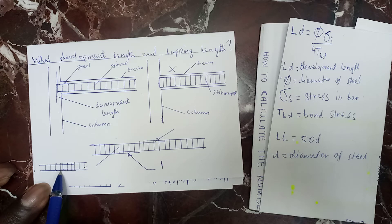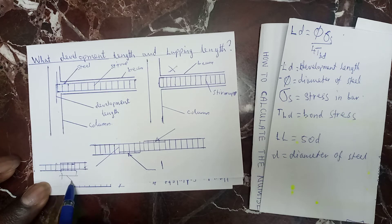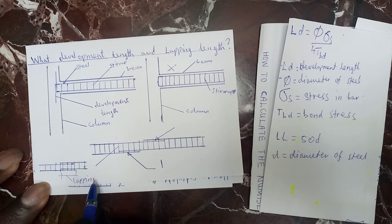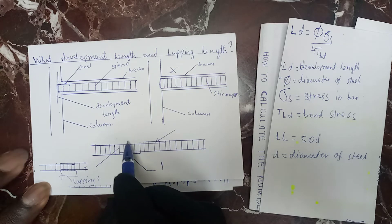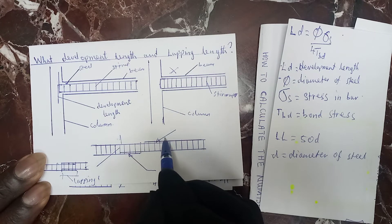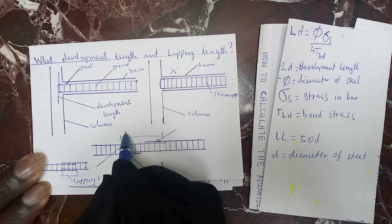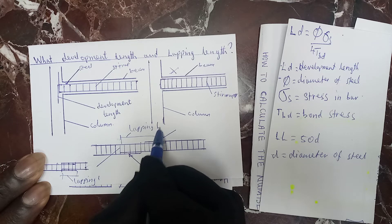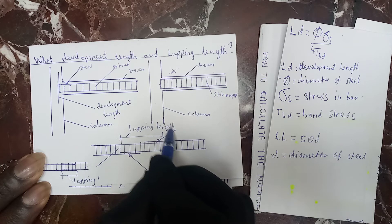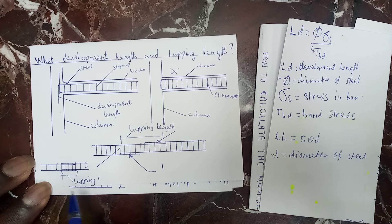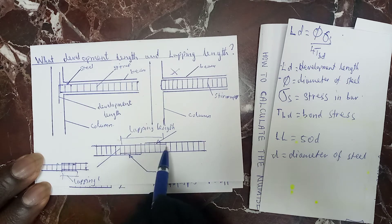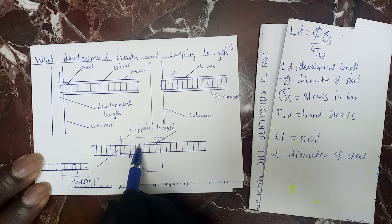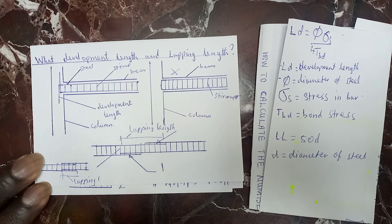So when you provide lapping, here you can see this is the lapping length. When you provide it straight it is not always good. When you provide it like this — this one long and this one also long overlapping — it is always good.